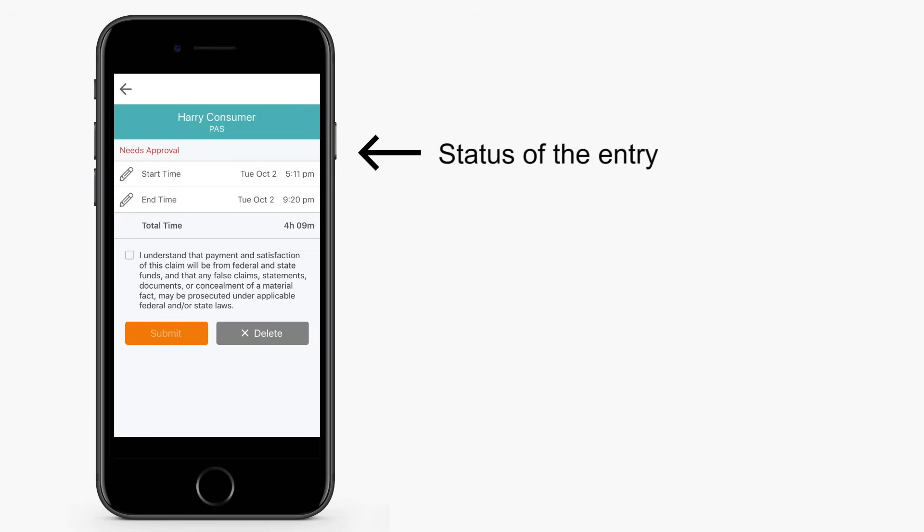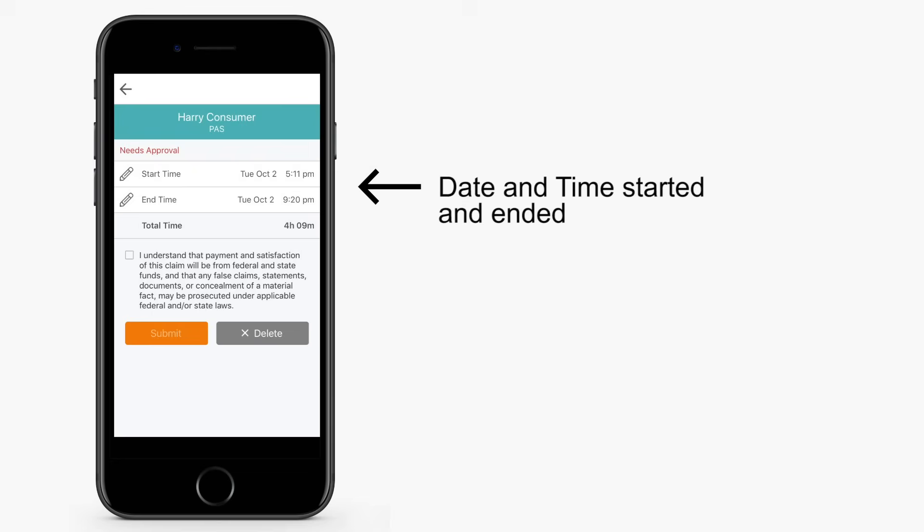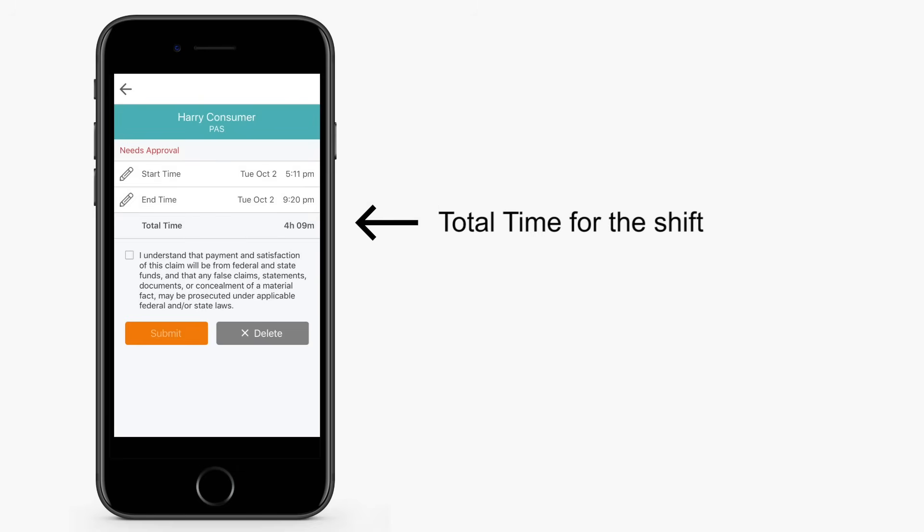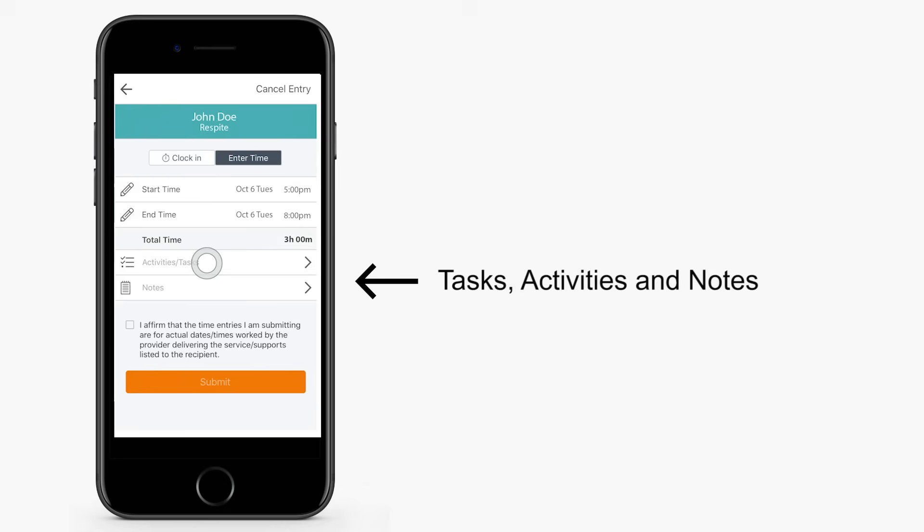The details page shows who you worked for and the service you provided. You will see the status of the entry, date and time started and ended, and total time for the shift. Any tasks, activities, and notes recorded for the shift display below your time worked.